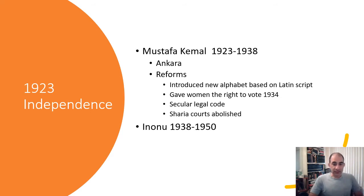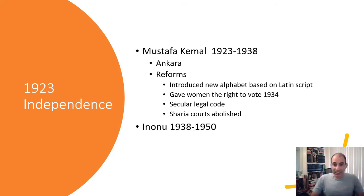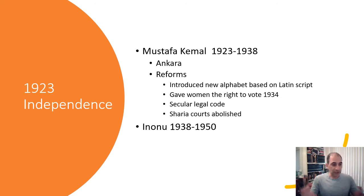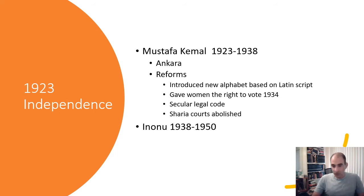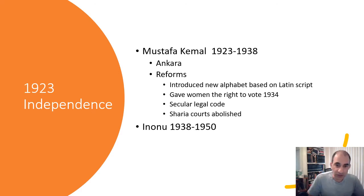What you see with his reforms is he's definitely trying to bring Turkey to a more Western style of society. He changes the alphabet and bases it more on a Latin script, as opposed to what you had under the Ottoman period. He gives women the right to vote in 1934. He creates a more secular legal system — Sharia courts are abolished. Under many Islamic powers they follow Sharia law, which is Islamic law. Mustafa Kemal says no, we want to be a more secular society; we don't want our laws based on the Quran.